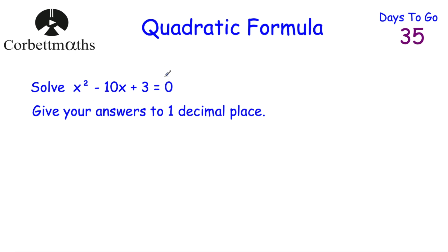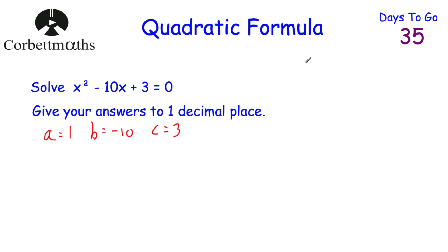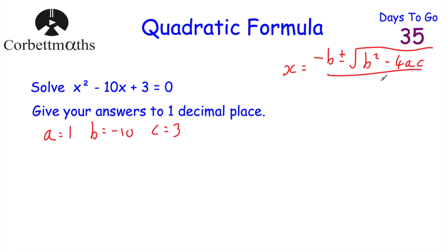So here we've got a quadratic equals zero. Let's label a, b, and c. a is the coefficient of x squared — here it's 1x squared, so a equals 1. b is the coefficient of x, the number in front of x, that's minus 10. And c is the constant, the number on the end, so c equals 3. Now let's write down the quadratic formula: x equals negative b plus or minus the square root of b squared minus 4ac, all divided by 2a.